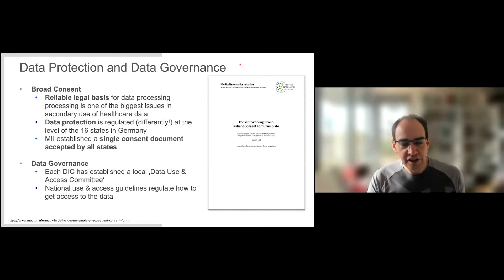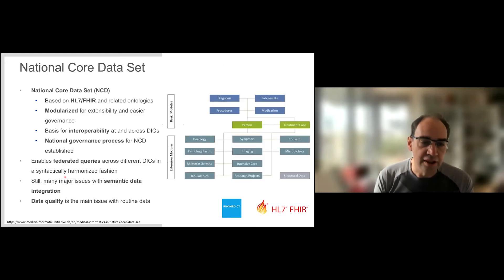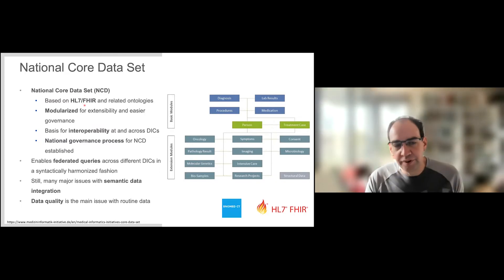Another component is data governance. Each university hospital has established a local data use and access committee. We have national overarching guidelines that regulate transparent access to data. The second part was the national core data set: a modular data set with basic modules for diagnosis, lab results, medication procedures, person demography, and extension modules like oncology, pathology results, imaging, molecular genetics. All of that has been modeled in HL7 FHIR.